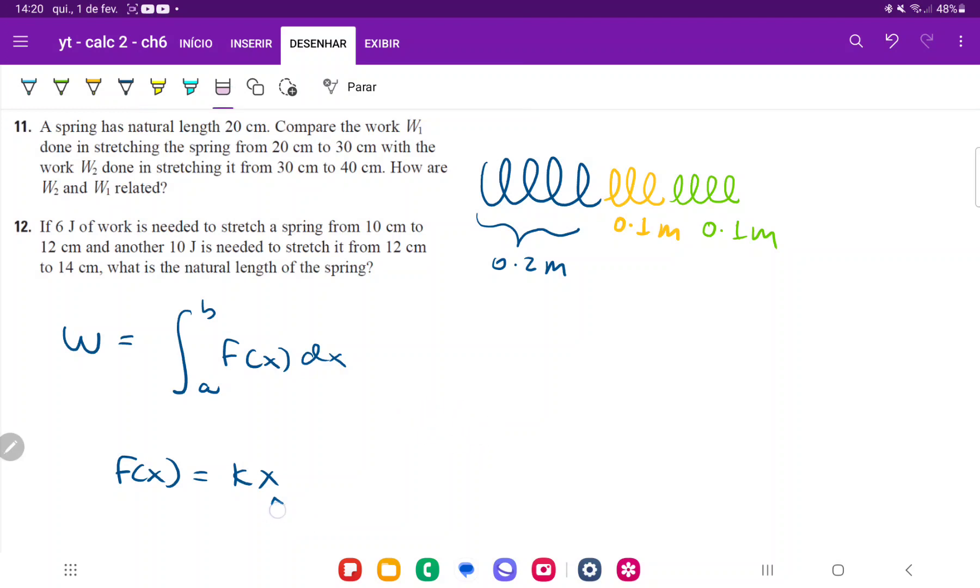Once we have this, let's calculate W1. W1 is the integral that stretches it from 20 centimeters—but 20 centimeters is its resting place—so it starts from 0, stretched out to 30 centimeters. Since 30 centimeters means we're stretching it 10 centimeters beyond its natural point, that's 0.1 meters, the length in yellow.